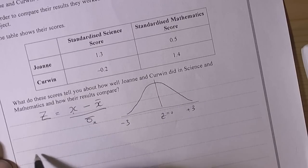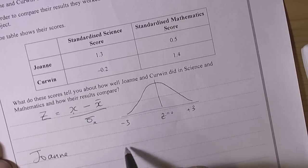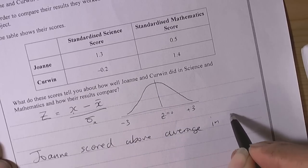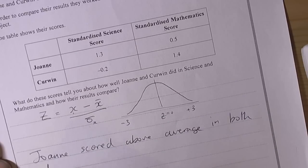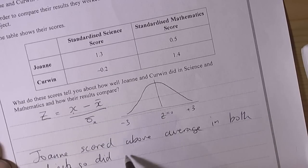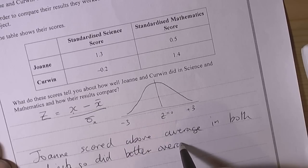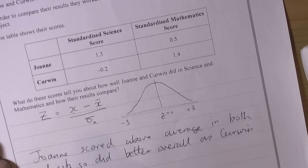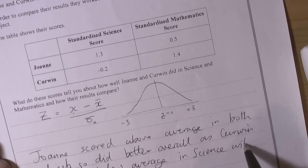So comparisons then. We could say things like Joanne scored above average in both subjects, so did better overall, as Kerwin performed below average in science with a negative standardized score. However,